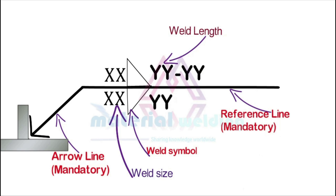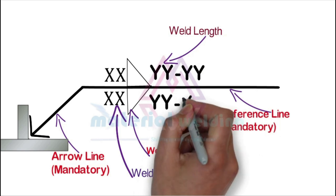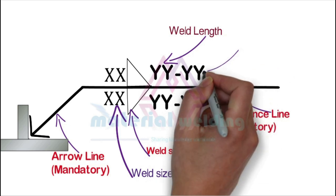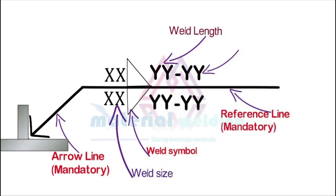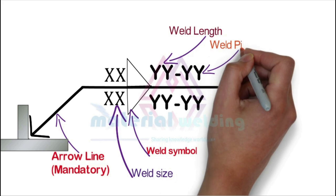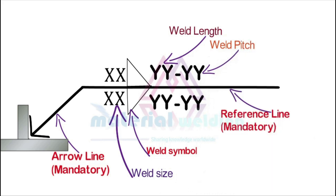Weld pitch is given after the weld length if applicable. Weld pitch means the center-to-center distance between intermittent welds. Weld length and weld pitch are normally applied to intermittent fillet welds, for example when welding sheet metals. To summarize, weld size is always given on the left-hand side of the weld symbol, while weld length and pitch are given on the right-hand side.